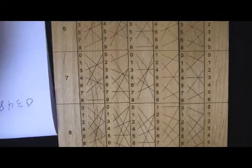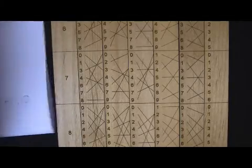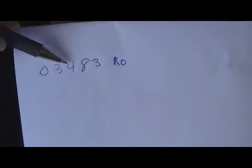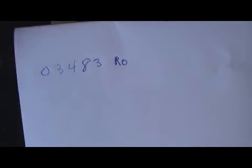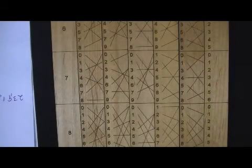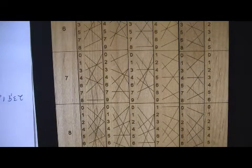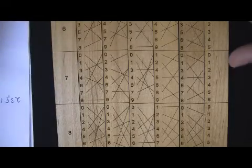So, the 7 happens to go into this number just by chance, perfectly. So, the answer is 3,483. 3,483 times 7 equals 24,381. Really that simple.